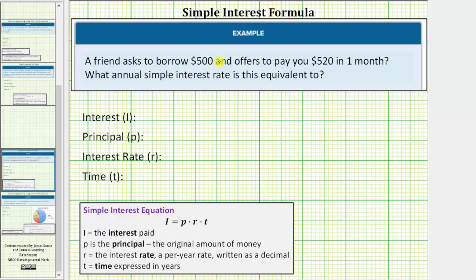A friend asked to borrow $500 and offers to pay $520 in one month. What annual simple interest rate is this equivalent to?